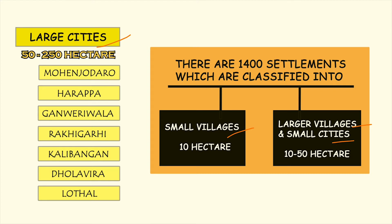For example, large cities are usually 50 to 250 hectares in size, whereas small cities and large villages are 10 to 50 hectares, and small villages are 10 hectares in area. Based on this, the settlements are divided, and some examples of large cities have been provided for the Harappan civilization.